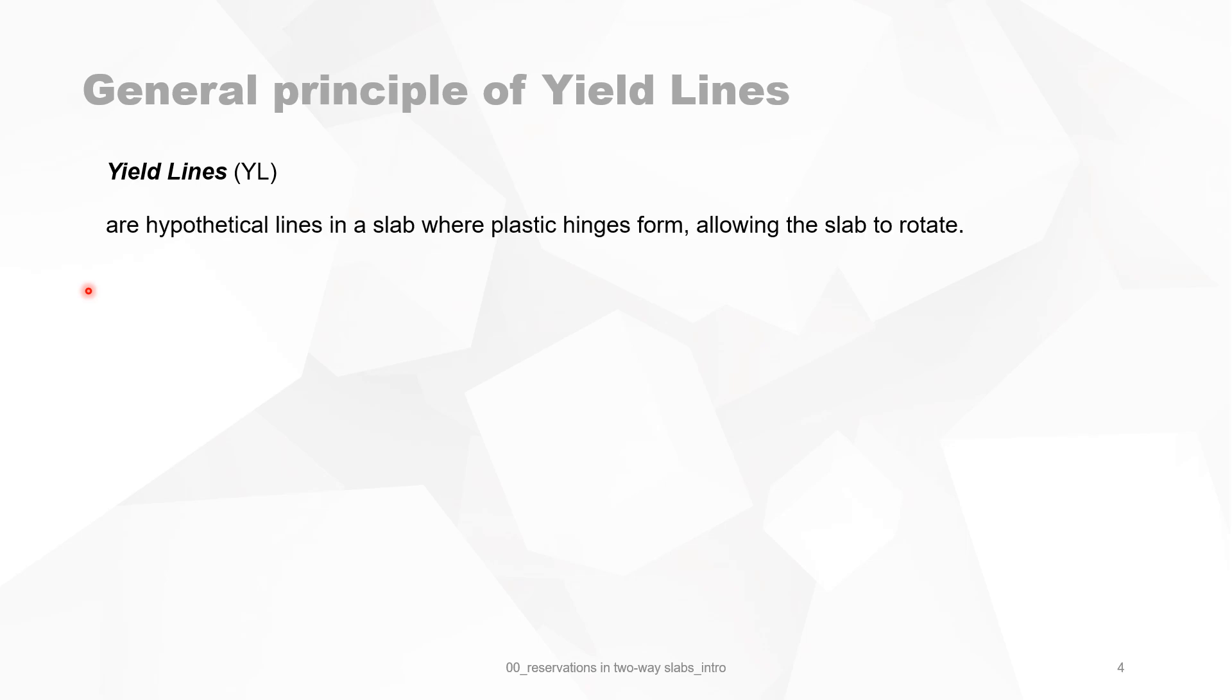Yield lines are hypothetical lines in a slab where plastic hinges form, allowing the slab to rotate. They represent in fact the locations of maximum bending moments, or they give you a picture of when the slab is loaded with critical load, how the crack patterns form.